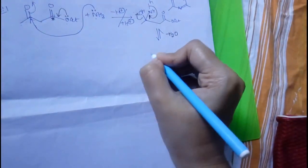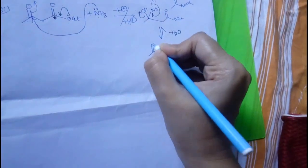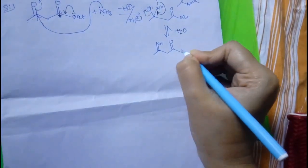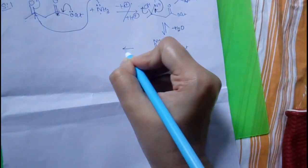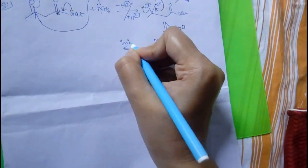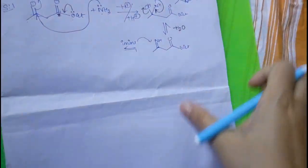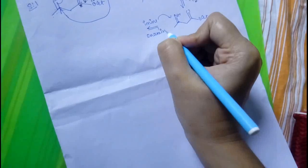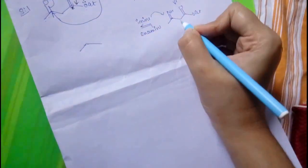By tautomerism, the imine will go to enamine. This is the imine compound. This is the enamine compound.